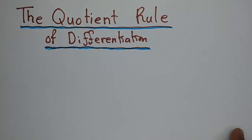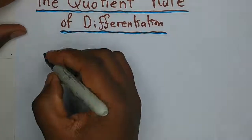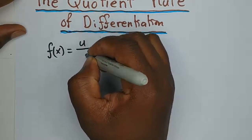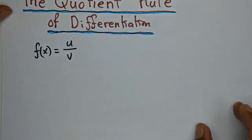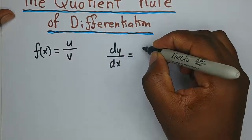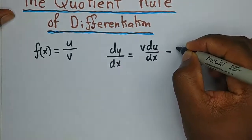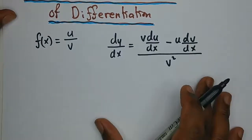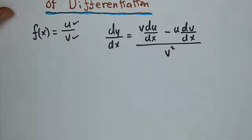Today we're looking at the quotient rule of differentiation. This rule only applies to functions that are dividing, meaning you have a function u divided by a function v. So as long as you have two functions dividing, you can apply the quotient rule. The quotient rule is given by the formula: v du/dx minus u dv/dx, all over v squared. Whatever you have as a numerator becomes u, and whatever you have as a denominator becomes v.